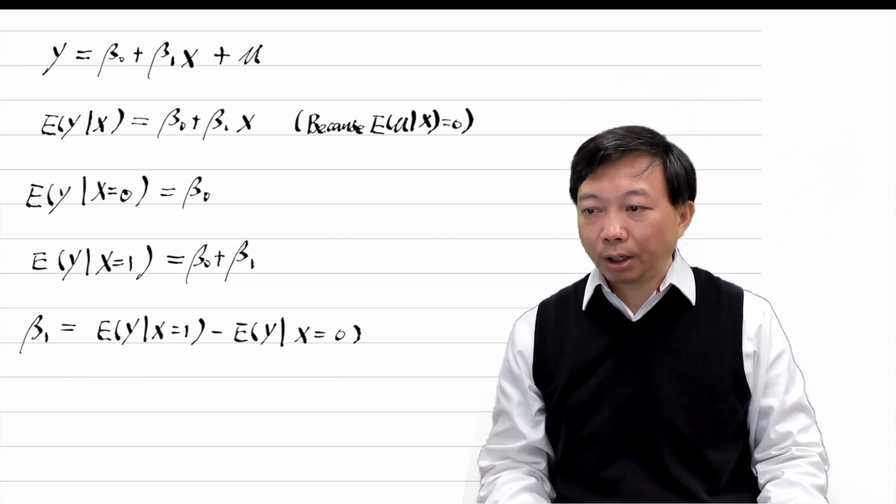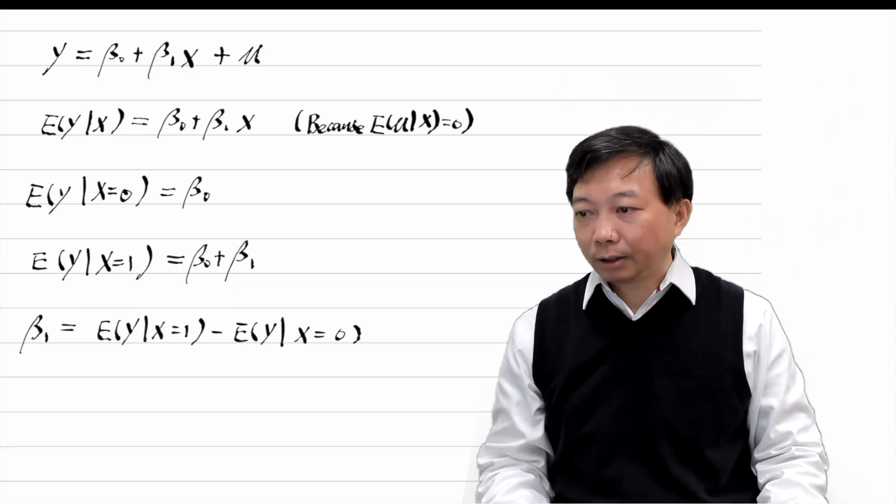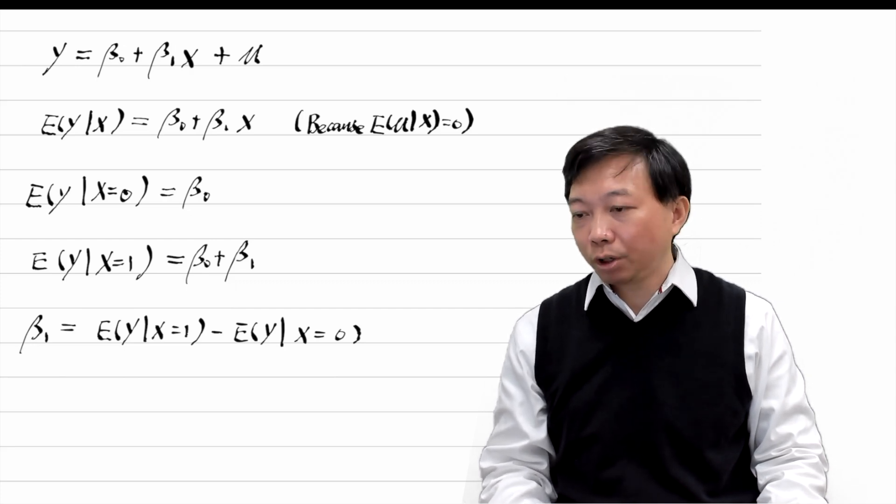The binary variable divides the entire population into two groups. The beta 1 is the difference in y between them.